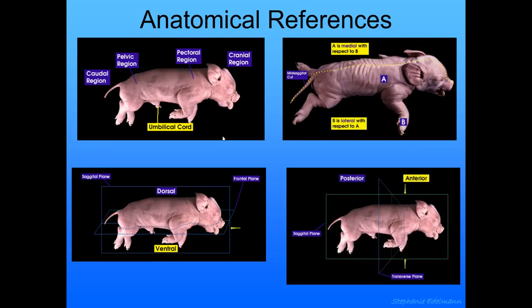What we're going to learn from the fetal pig is a lot of anatomical references — some anatomical references for direction. This is the cranial region, this is the pectoral region, this is the pelvic region, and all of that. What dorsal and ventral look like, anterior and posterior.